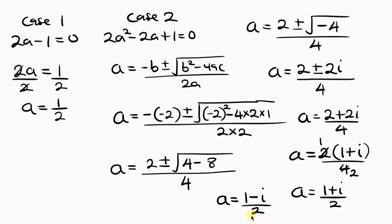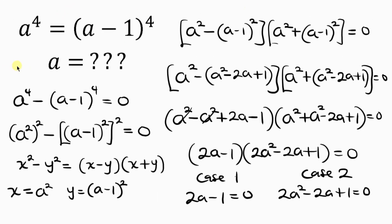So we have 3 solutions for A. You might wonder why we have 3 solutions instead of 4. The reason is that this involves A to the 4th and A minus 1 to the 4th. When we expand the right-hand side — perhaps using binomial expansion — the A to the 4th terms cancel off, so the highest degree remaining is 3, which is why we get exactly 3 solutions.